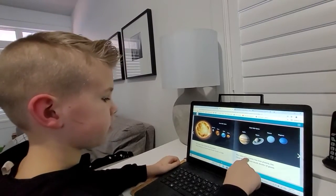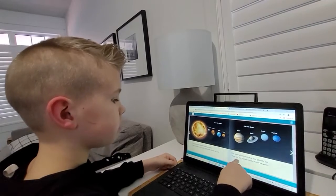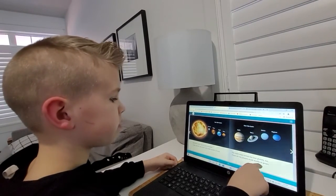The outer solar system has four planets too. These are big planets made mostly out of gas.